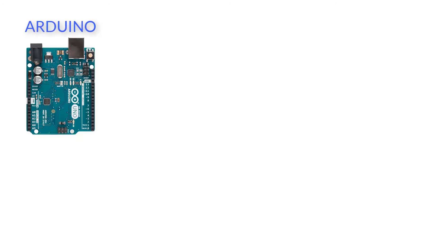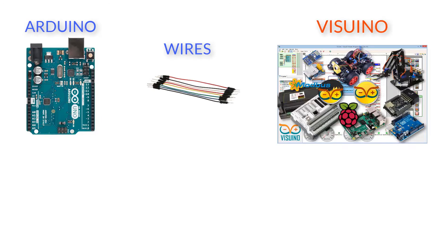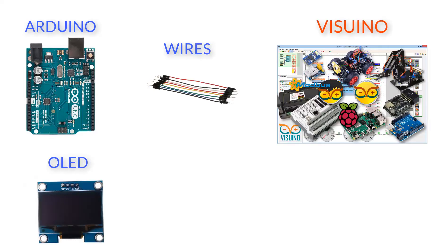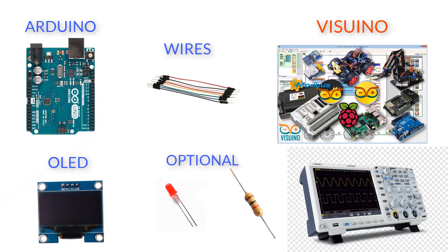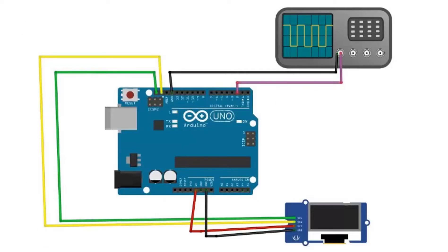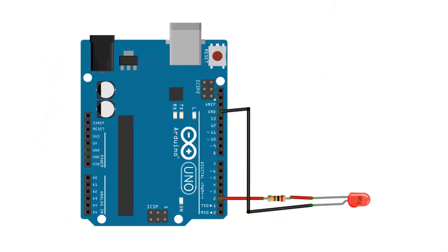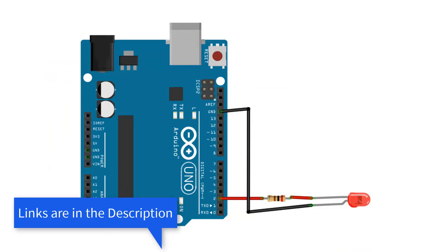For this project you will need an Arduino board or any other board, some jumper wires, the Visuino program, an OLED display, and optionally, if you want to track the signal, one LED and one kilo ohm resistor or an oscilloscope to see the signal. Use this schematic for OLED and oscilloscope, or this schematic if you just plan to use it with the LED.